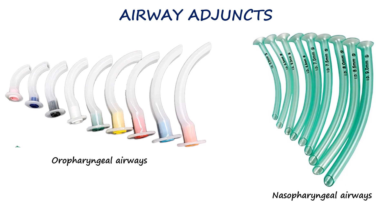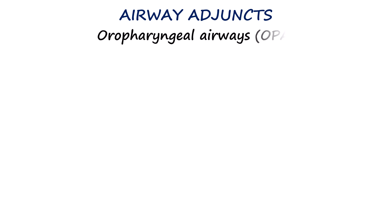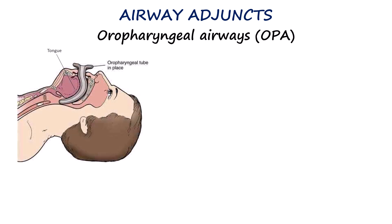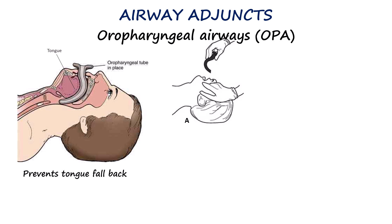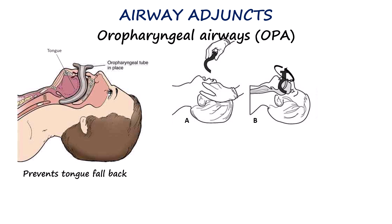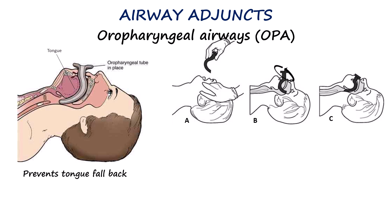The two most commonly used basic adjuncts are the oropharyngeal airway and the nasopharyngeal airway. The oropharyngeal airway is a curved plastic device that sits over the tongue and extends into the pharynx; its main function is to prevent the tongue from falling back and blocking the airway. To insert it, first hold it upside down with the tip pointing toward the roof of the mouth. Gently advance the tip until it reaches the soft palate, then rotate the airway 180 degrees so it follows the natural curve of the tongue.